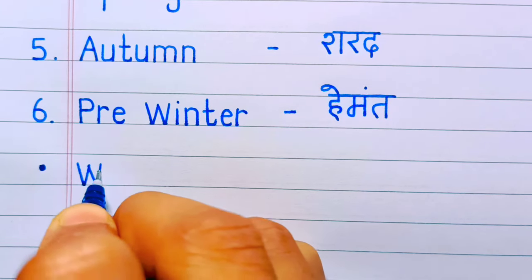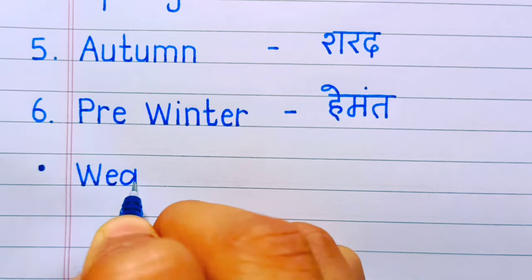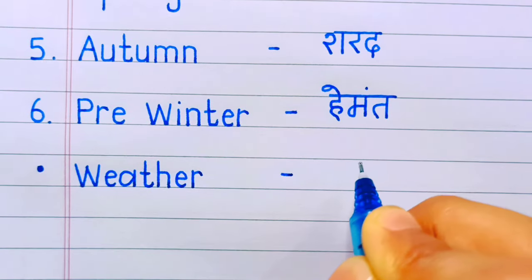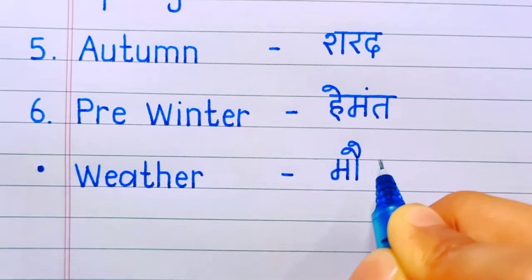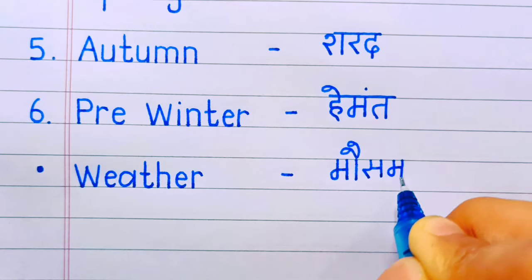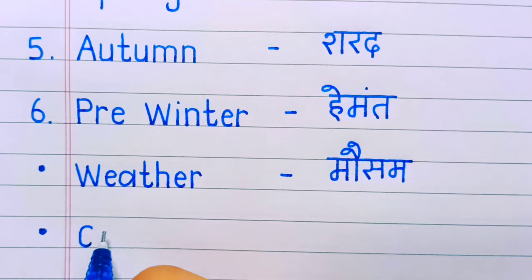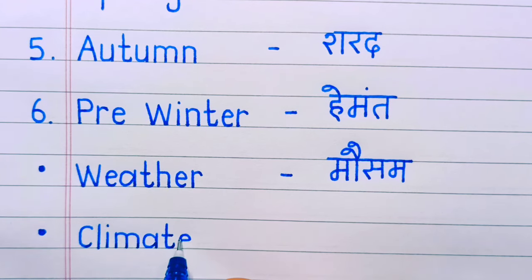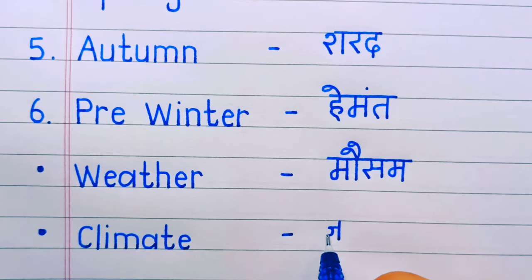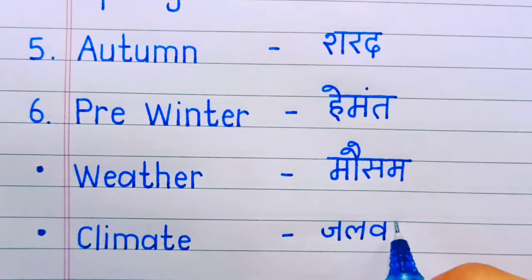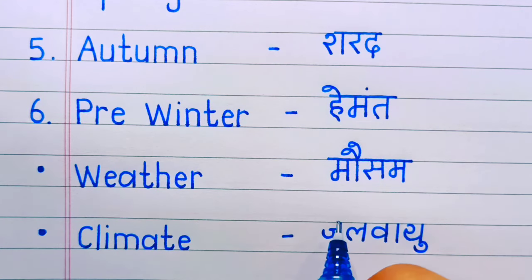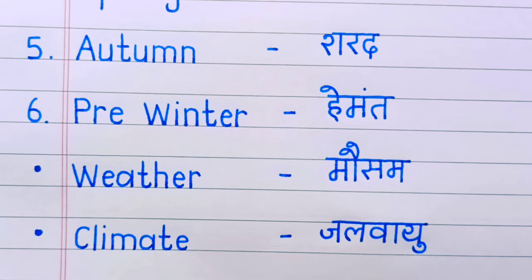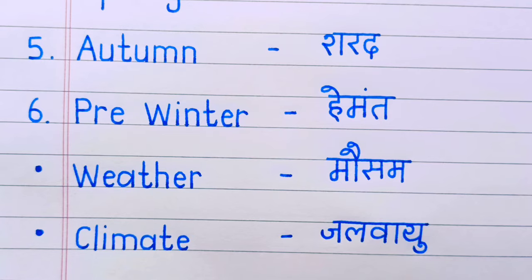And two season-related words: first, weather — weather means mausam; and second, climate — climate means jalvayu. If you like this video, please subscribe to our YouTube channel. Thank you.